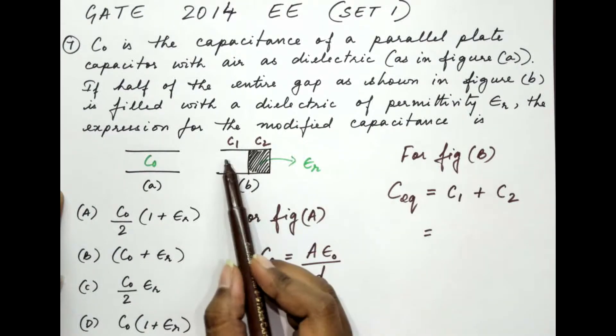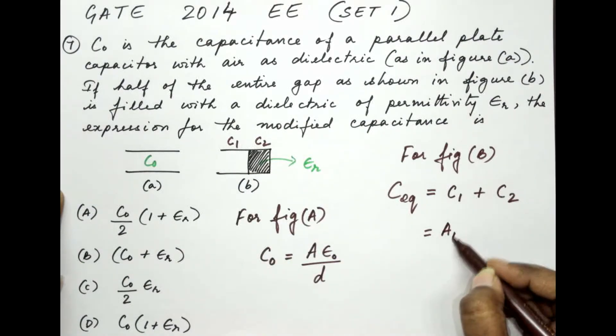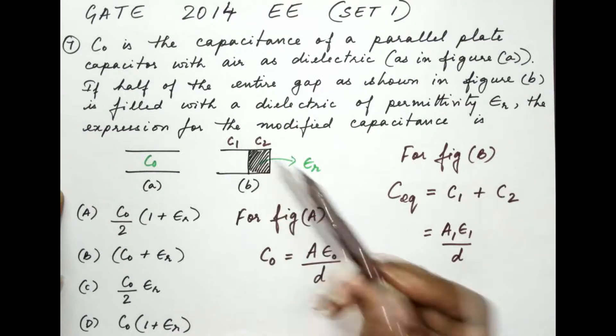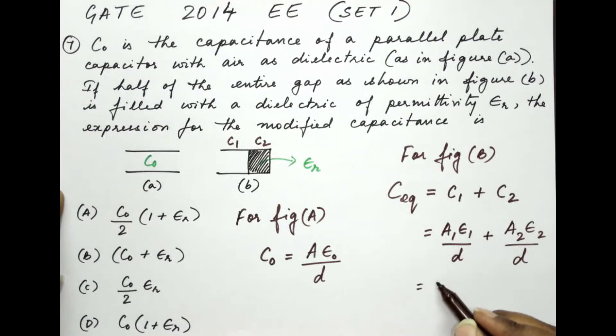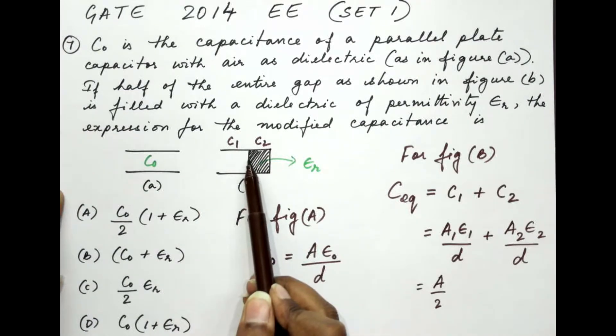So C1 is the part of the capacitor which is filled with air. So the expression would be A1 epsilon 1 by D. The separation between the plates is the same for both parts of the capacitor. So D will remain the same for both the capacitance C1 and C2. In case of C2, let's write this as A2 epsilon 2 by D. The area of the plates is the same, right? So here we are going to write this as A by 2. Why is it A by 2? Because half of the capacitor is filled with one dielectric while the other half is filled with the other. So the area of the plates is now halved.